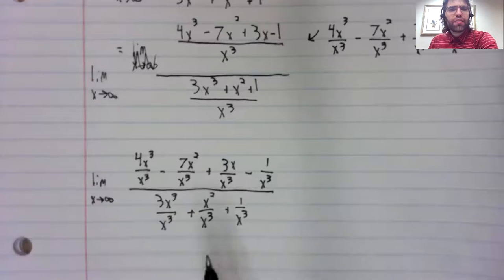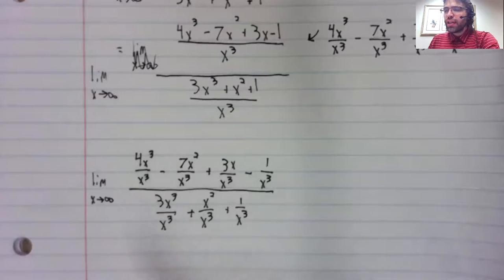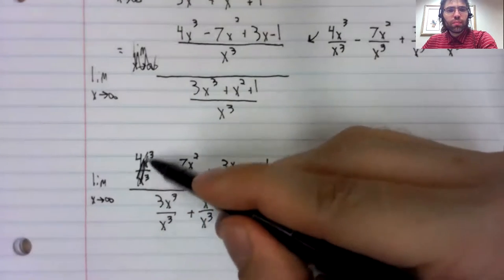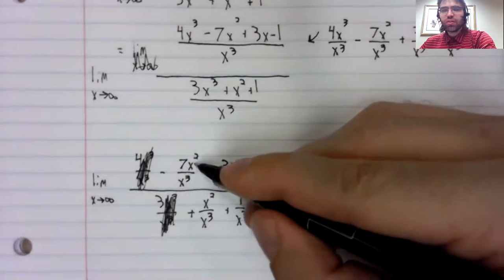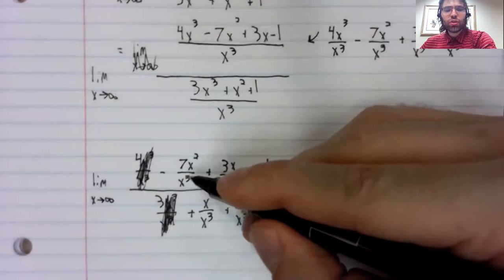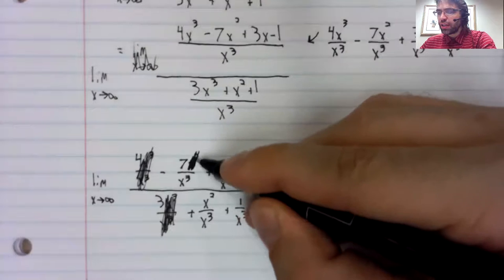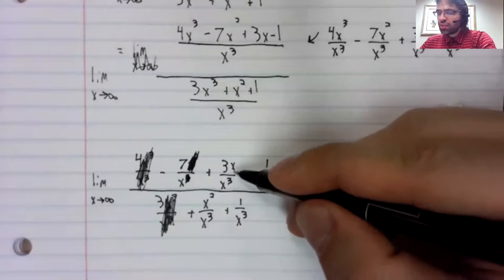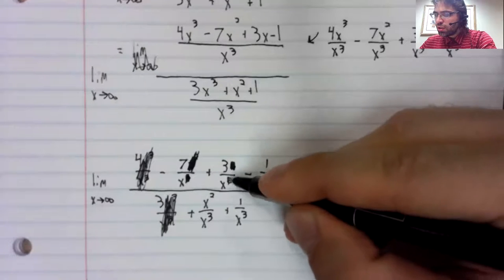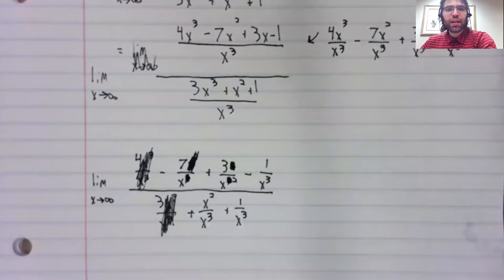And it might look like this is worse than what we started with. Actually, it's a lot simpler. We can cancel those x cubes. And this x squared and this x cubed partially cancel.